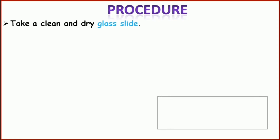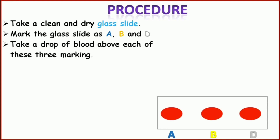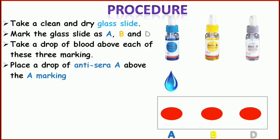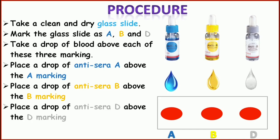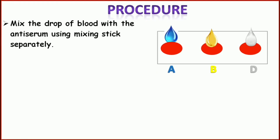For the procedure, take a clean and dry glass slide. Mark the slide as A, B, and D. Take a drop of blood above each of these three markings. Now place a drop of antigen A above the marking A, a drop of antigen B above the B marking, and a drop of antigen D above the D marking. Mix the blood with the antigen A using a mixing stick. Then with another mixing stick mix at the B marking, and again with another stick mix at the D marking. Do not use the same stick for mixing separate drops of blood.